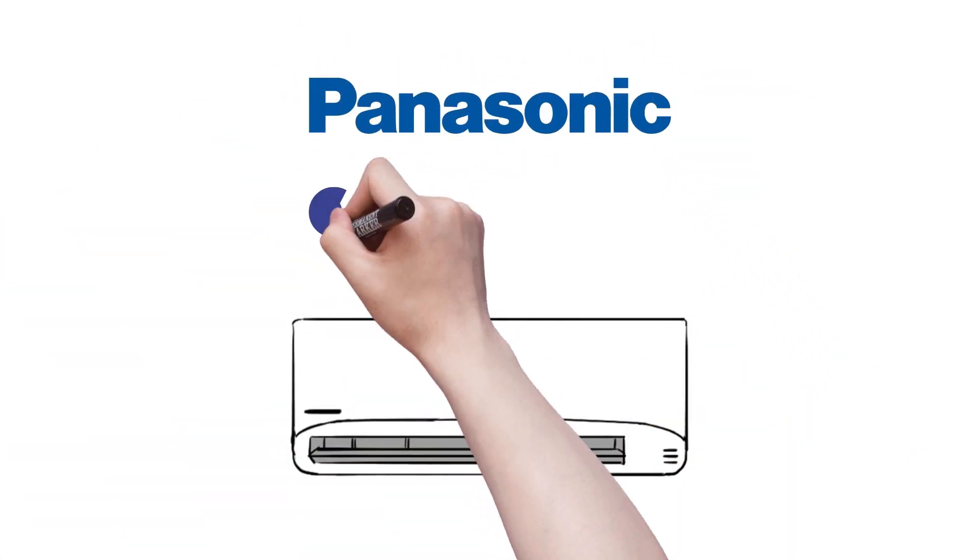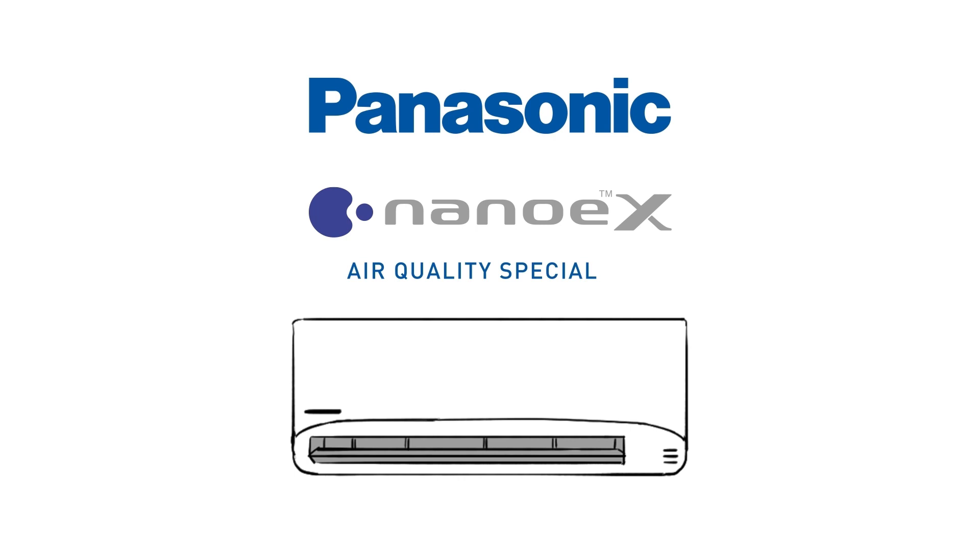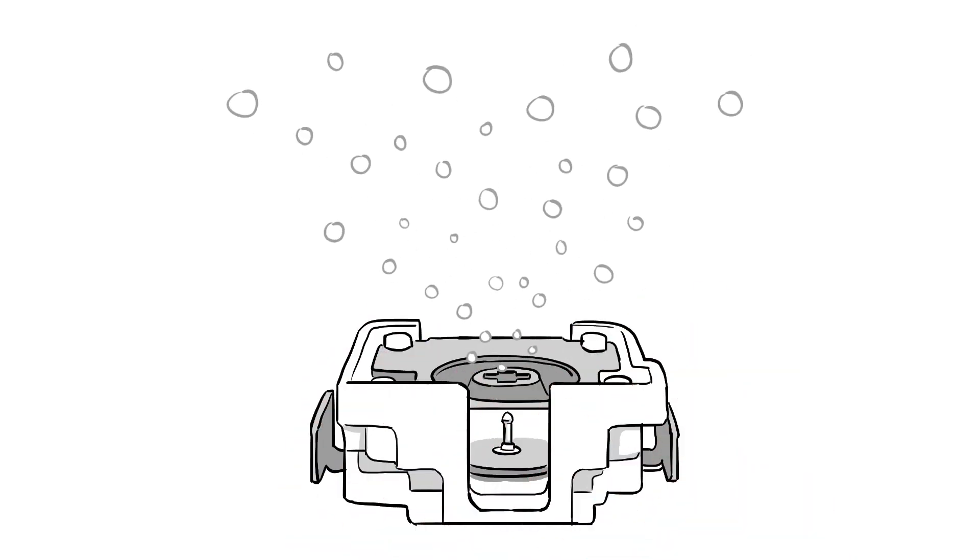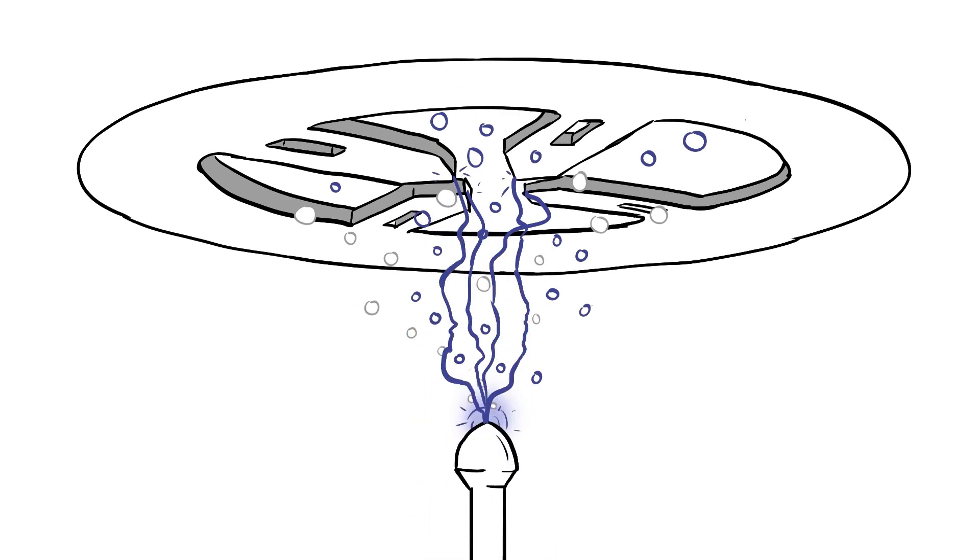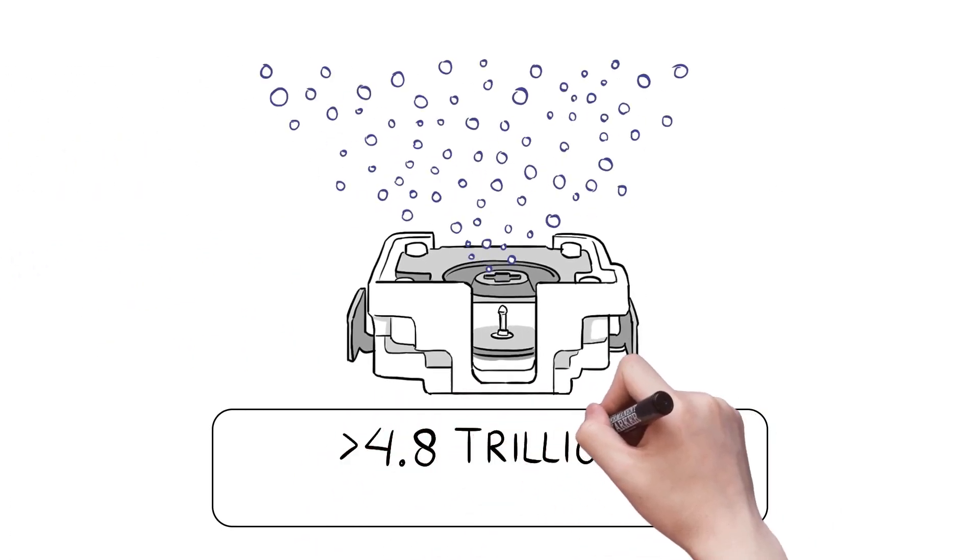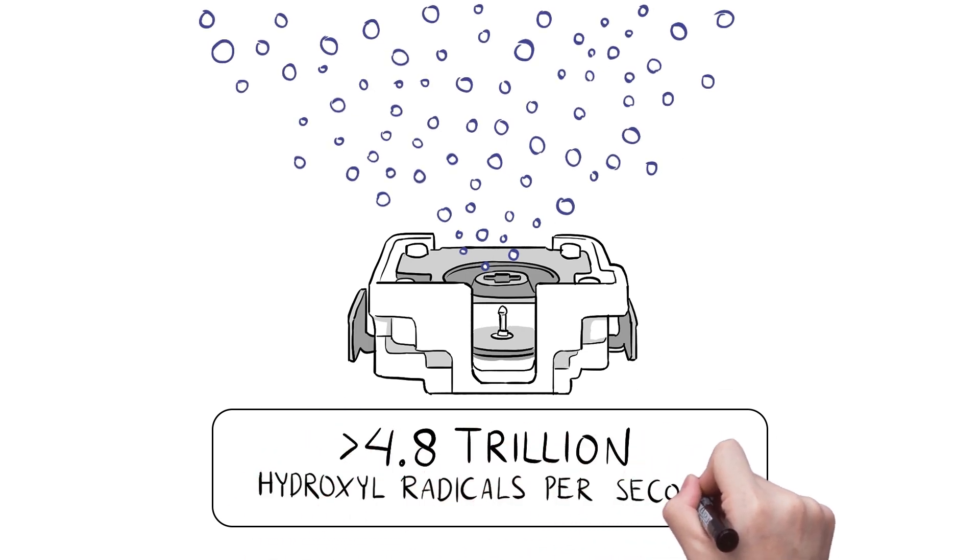Let us demonstrate how NanoEX improves the air quality in your room. NanoEX actively collects water molecules from the humidity in the air and applies a high voltage to them, generating over 4.8 trillion hydroxyl radicals, or nanoparticles per second.